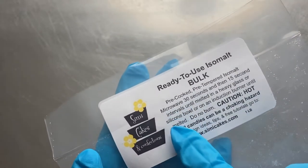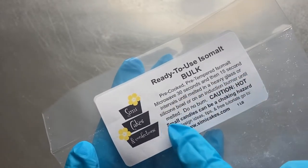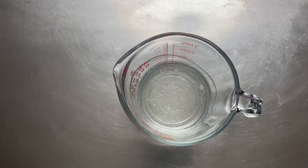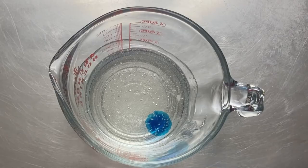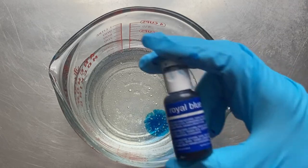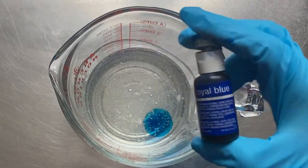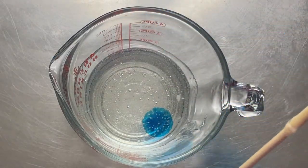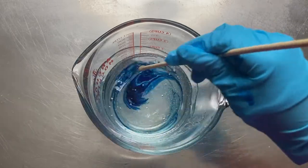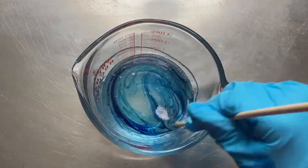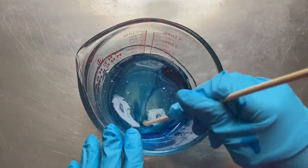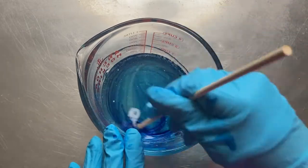Now I melt the isomalt tiles in my microwave based on the instructions. Next, I add a very small amount of gel paste color. A small amount of airbrush color may be used as well. The coloring may sizzle when added to the hot isomalt. This is completely normal. Next, I use my bamboo skewer to gently stir the color into the isomalt.